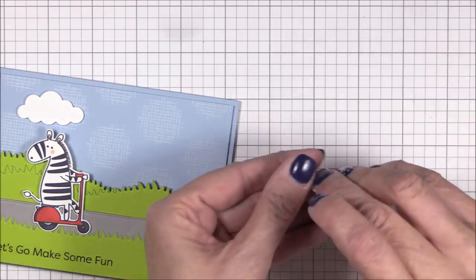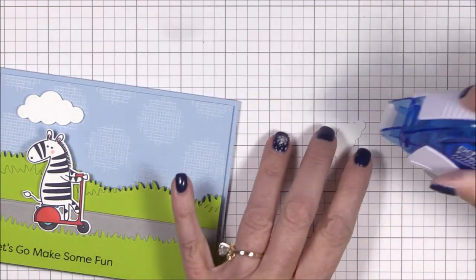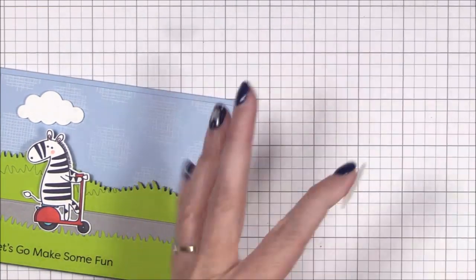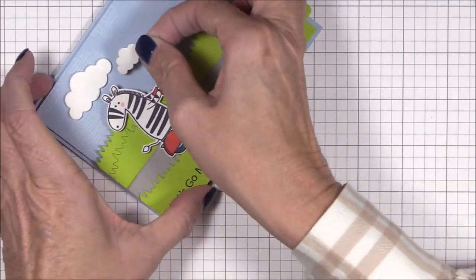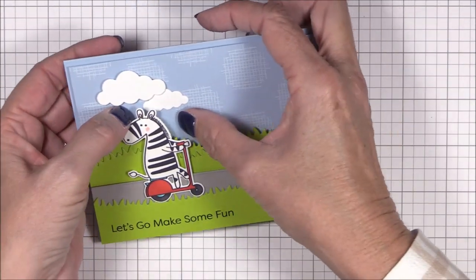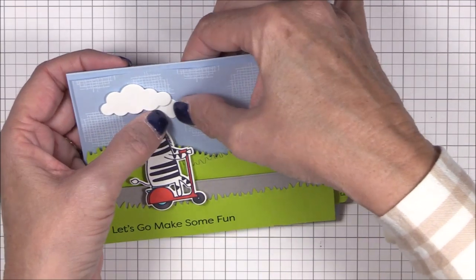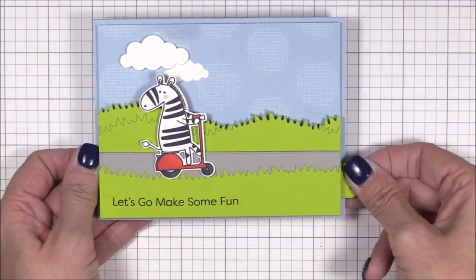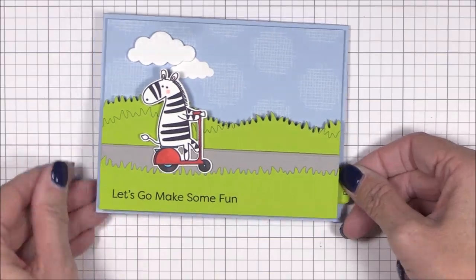As I looked at my finished card, I felt like it needed another point of interest on the blue background to balance things out. So I die cut some clouds from smooth white cardstock using the cute cloud outlines dynamics. I'll adhere them with a foam square and tape runner adhesive just above the zebra's head. Now all is right with the world.